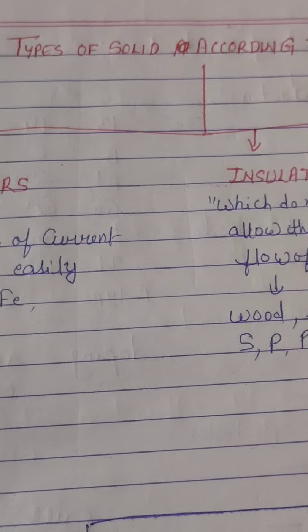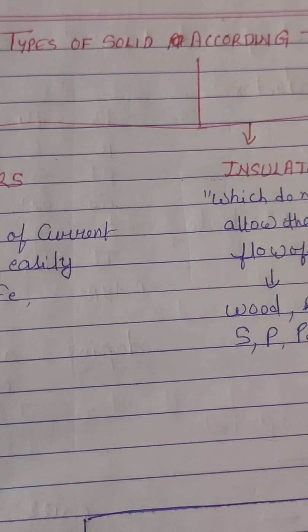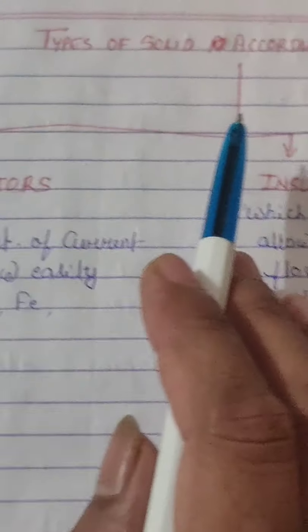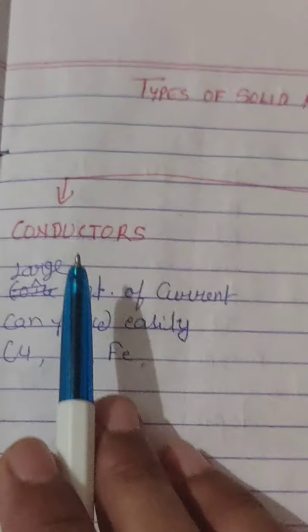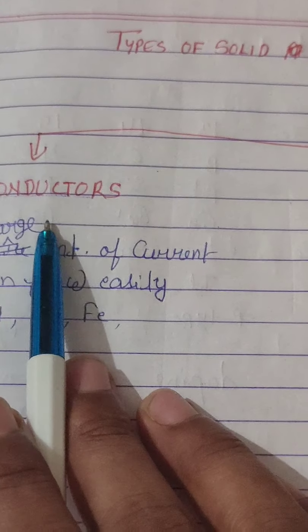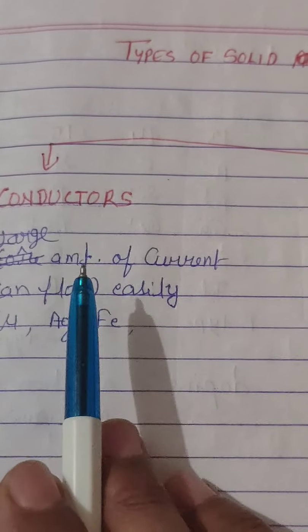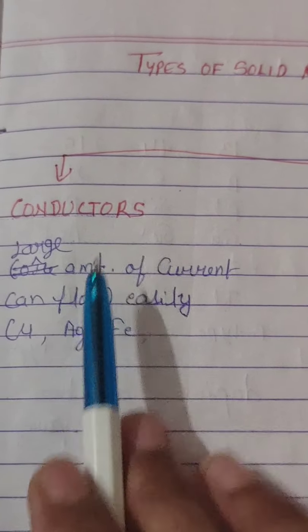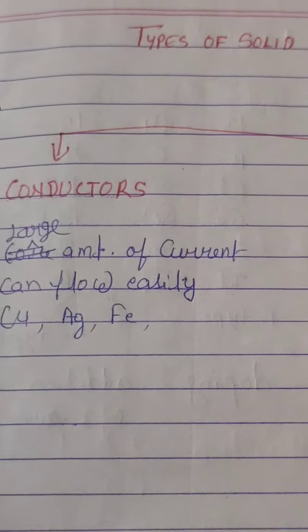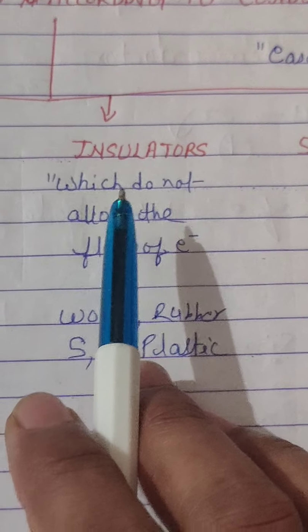Good morning students. In the last video we did defects in solids. Now we are going to cover types of solids according to conductivity. There are three types of solids: first is conductors, second is insulators, and third is semiconductors. Conductors are materials which allow electricity to flow through them — they allow large amounts of current to flow easily.